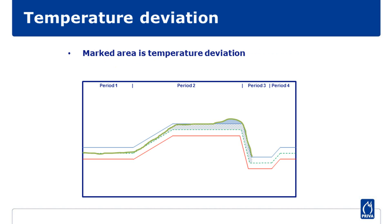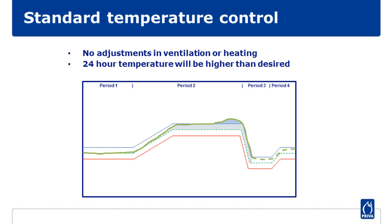Because the expected temperature is what I want to realise to achieve my 24-hour temperature. In other words, the area between the temperature measurement and the expected temperature is the temperature deviation. When I do not make an adjustment, the temperature in the glasshouse will be controlled on the basis of the ventilation and heating strategy. The graph shows an example of this with a dotted line. This means that there is a large part of the day the temperature is above the expected temperature, and the 24-hour temperature therefore becomes higher than desired.